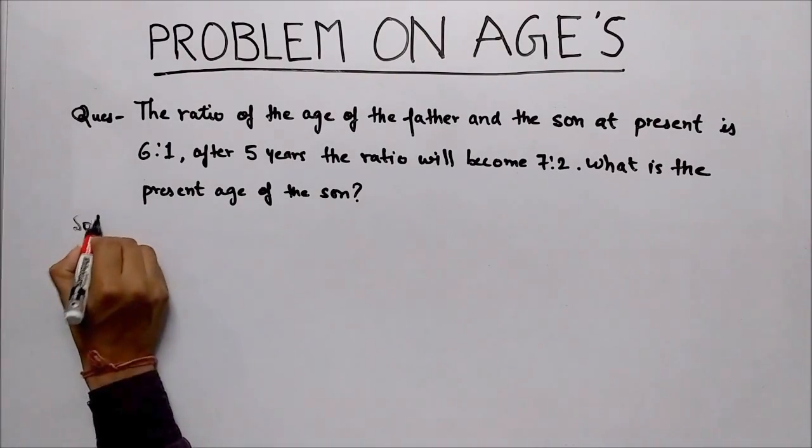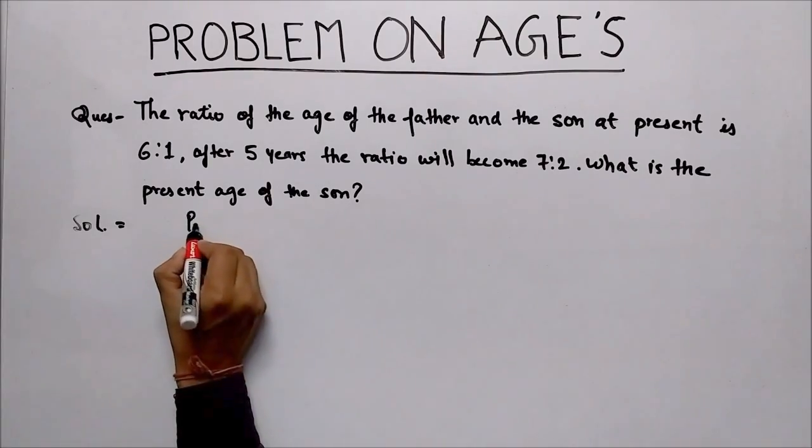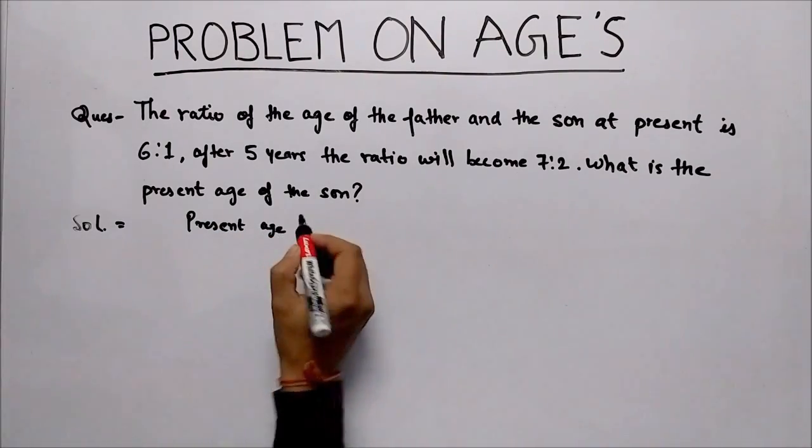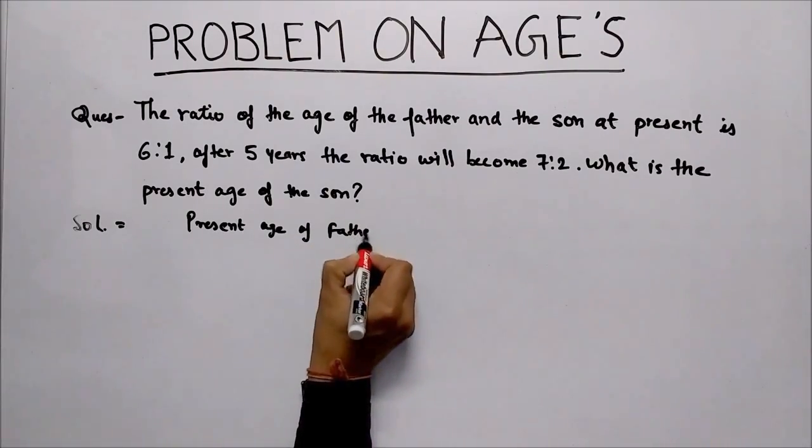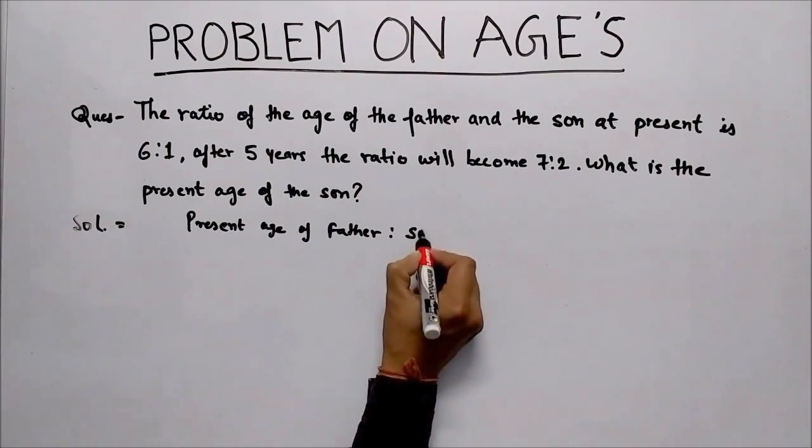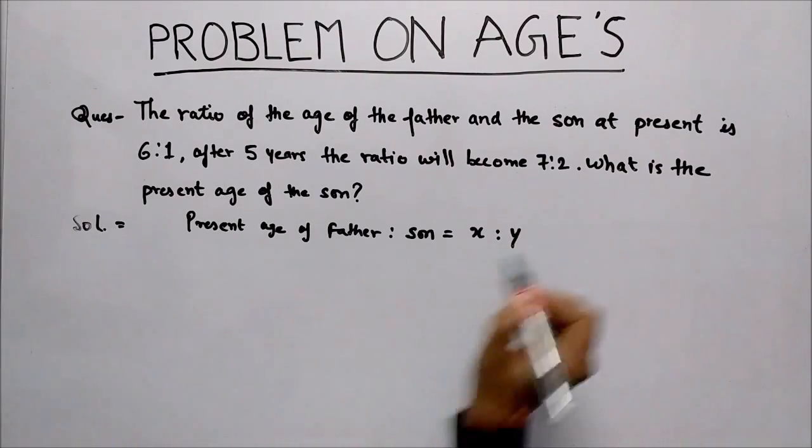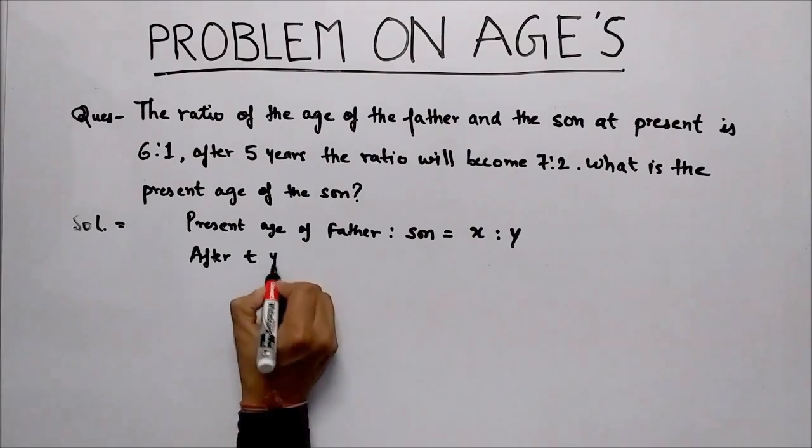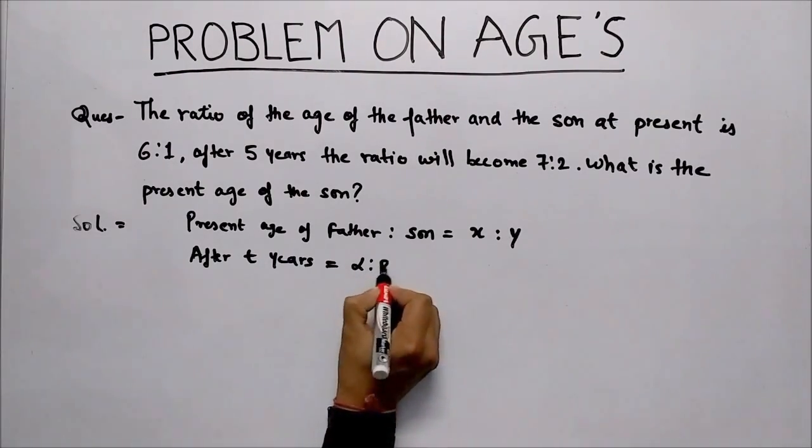To solve this question, we have a dedicated formula. First of all, we consider present age of father ratio son is x:y. And after t years, we assume alpha:beta.